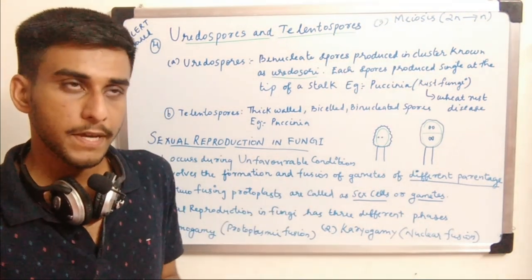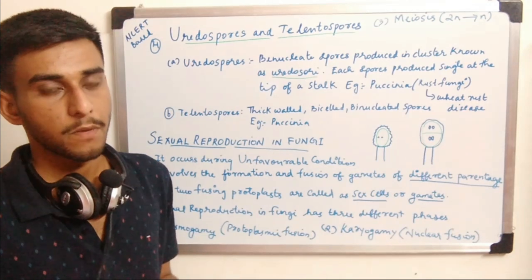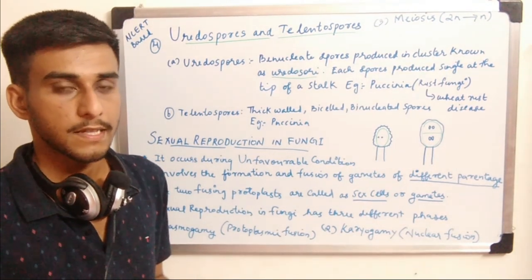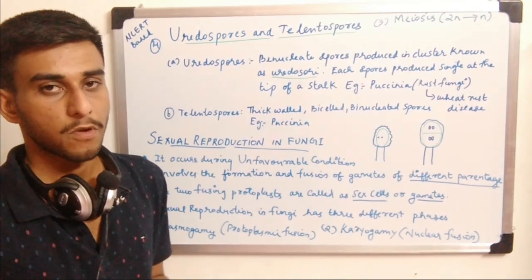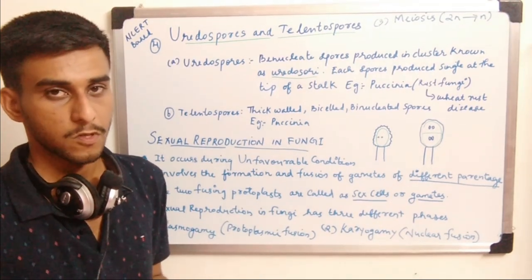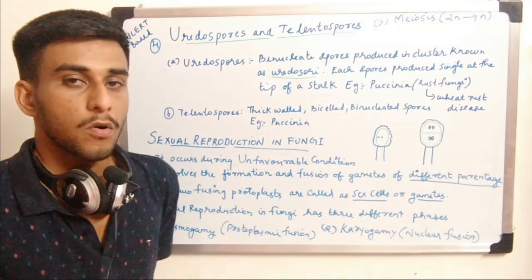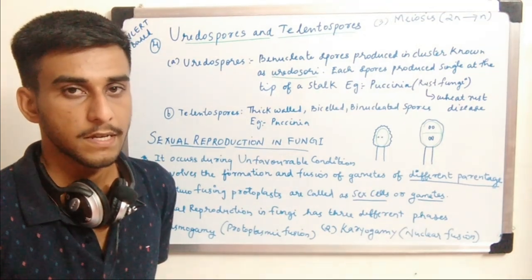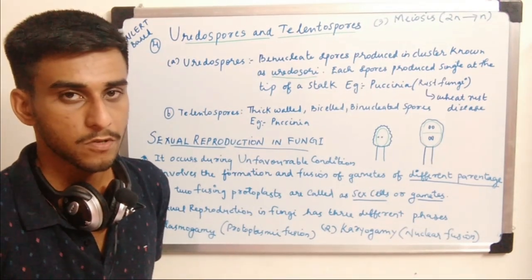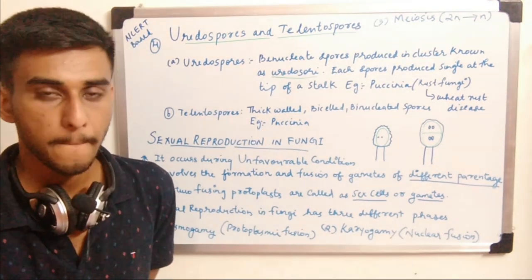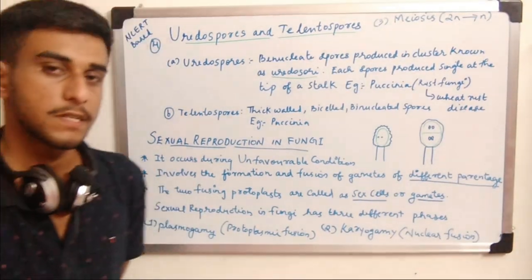Comparing the previous spore types: zoospores are produced in a zoosporangia in a cluster, aplanospores or sporangiospores are also produced in a group, conidia are formed either singly or in a chain. Apart from these, uredospores and teleutospores are produced singly — as a single type.